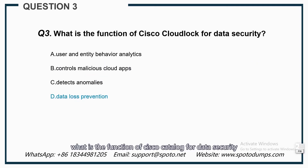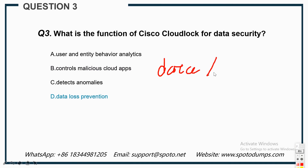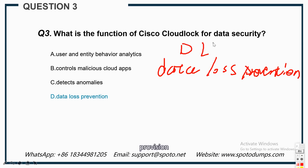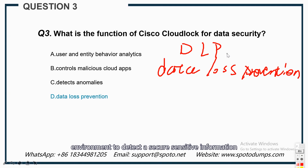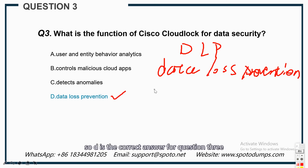Question three: What is the function of Cisco CloudLock for data security? For data security, Cisco CloudLock's function is DLP — Data Loss Prevention. This technology continuously monitors the cloud environment to detect and secure sensitive information. It provides countless out-of-box policies as well as highly tunable custom policies. So we are going to choose D, DLP, as the correct answer for question three.